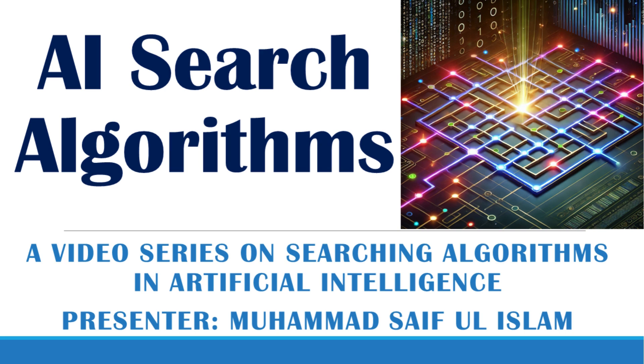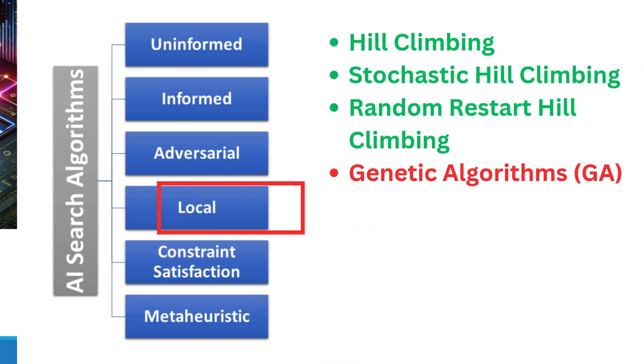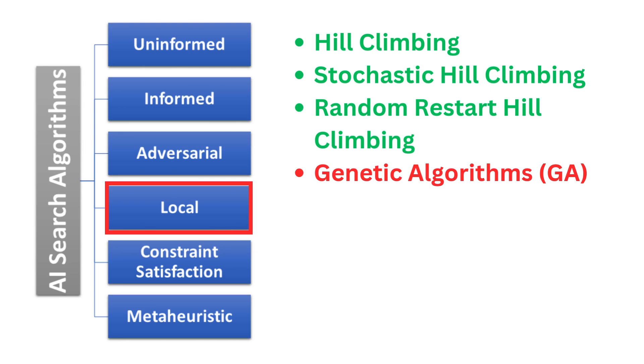Assalamualaikum. Welcome to my video series on searching algorithms in artificial intelligence. This video continues our discussion on local search algorithms. Hill climbing and its variants work well but they can get stuck in local optima. What if we could evolve better solutions over time just like nature does? That's exactly what genetic algorithms do. Let's unveil how they bring the power of evolution to optimization.